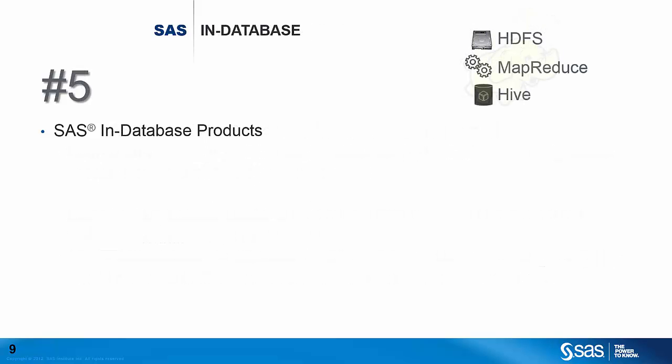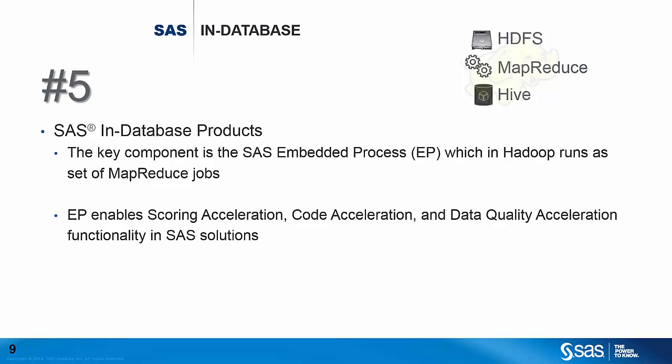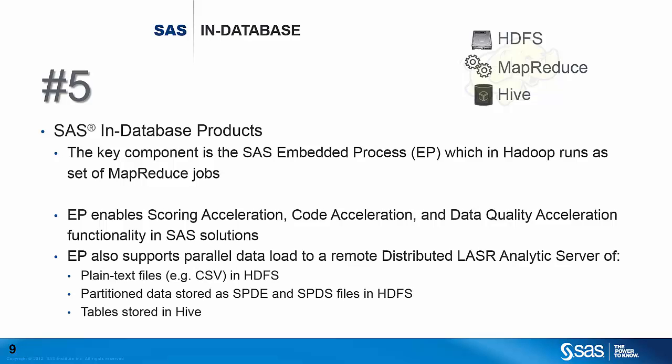Number five is the SAS In-Database products. SAS In-Database technology brings the analytics to the data instead of the more conventional approach of transferring data over to the analytic engine. The key component is the SAS Embedded Process, which runs in Hadoop as a set of MapReduce jobs. The Embedded Process enables scoring acceleration, code acceleration, and data quality acceleration functionality in SAS solutions. It also supports the ability to load data in parallel from Hadoop over to a remote distributed LASR Analytics Server, supporting transfer of plain text files from HDFS as well as partitioned data stored in SPD engine or SPD Server files in HDFS, and it can also parallel-load data stored in Hive tables. You must deploy the Embedded Process to all MapReduce nodes of your Hadoop cluster to get this functionality.